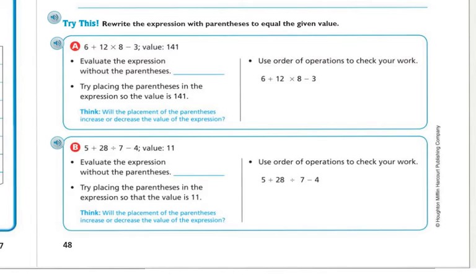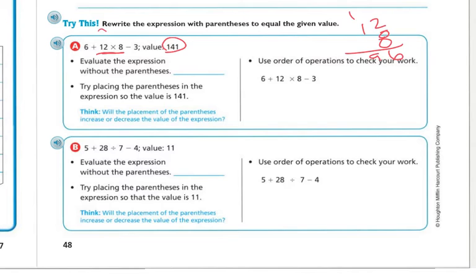Try this: rewrite the expression with parentheses to equal the given value. For six plus twelve times eight minus three with a value of 141, first evaluate without parentheses: twelve times eight is ninety-six, then six plus ninety-six is one hundred two, minus three is ninety-nine. That's not 141.